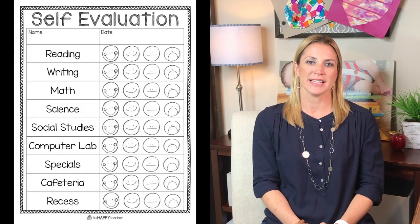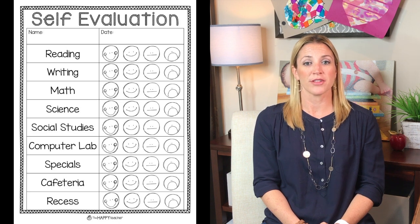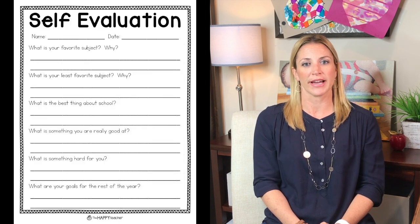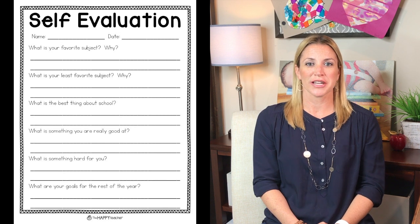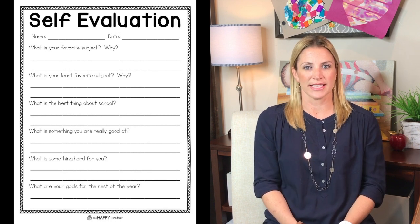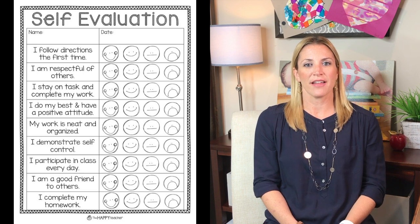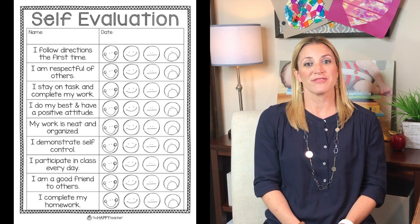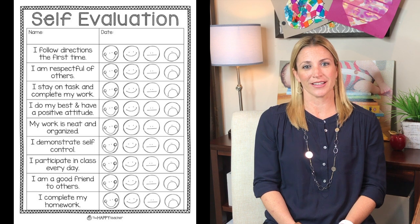My second tip is to let students be involved in parent-teacher conferences. I always have my students fill out a self-evaluation before I meet with their parent. The self-evaluation is a good way for the student to take ownership of their work habits, behavior, and grades. It's a lot easier to talk to parents about difficult topics when the student has already filled out a self-evaluation talking about how they think they're doing in school. And it's fun to see how honest the kids really are — the parents always love it too.